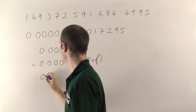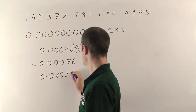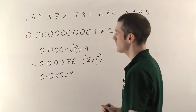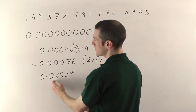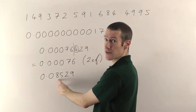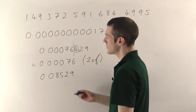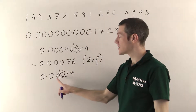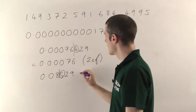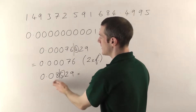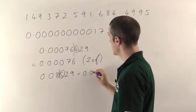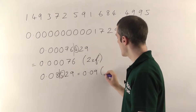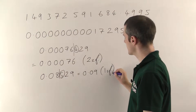Let's do another one: 0.08529 rounded to one significant figure. Ignore the leading zeros — 8 is the first significant figure, so you put your line there. Look at the next digit: it's 5 or more, so the 8 is going to go up. The answer is 0.09, because the 5 makes the 8 go up to a 9. That's one significant figure.